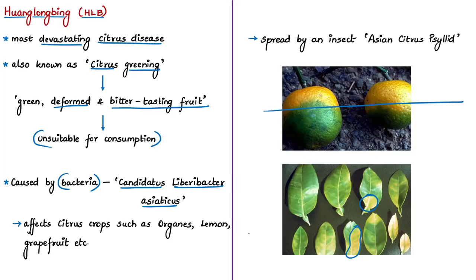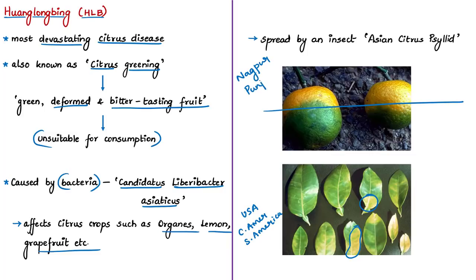News reports say that this disease was found before 2005 only in Asia; however, it is now common in Florida, California, and Texas in the United States, and has also hurt citrus crops in Central and South American regions. Once a tree is infected there is no cure, and it has devastating effects on citrus crops such as oranges and lemons. In India, almost all citrus-growing regions are affected by this citrus greening disease — including Nagpur, famous for sweet oranges, Punjab, and even Northeast India.